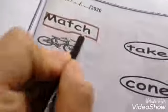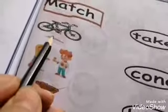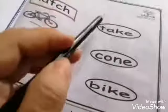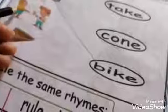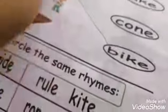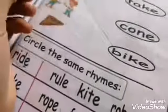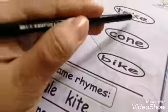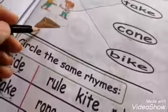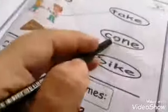Match each picture to its word. Look at number one — this is a bike. The first letter is B. Match bike to its word. Number two — this girl is taking something from the boy. When you give me my pencil, I will take it. First letter is T. Match take. The last one — cone. C-O-N-E. Cone. Match cone.